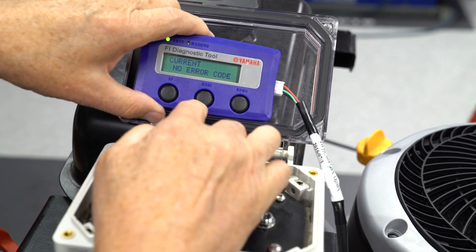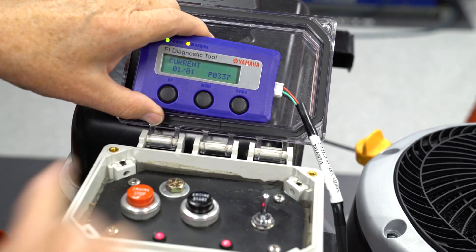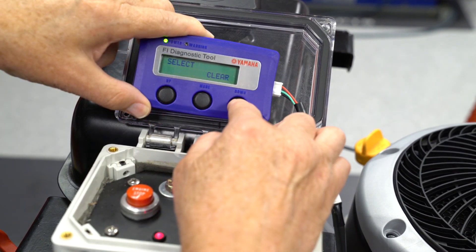When the ECU powers down, error code 337 will automatically move from current to history, even if the problem is not fixed.